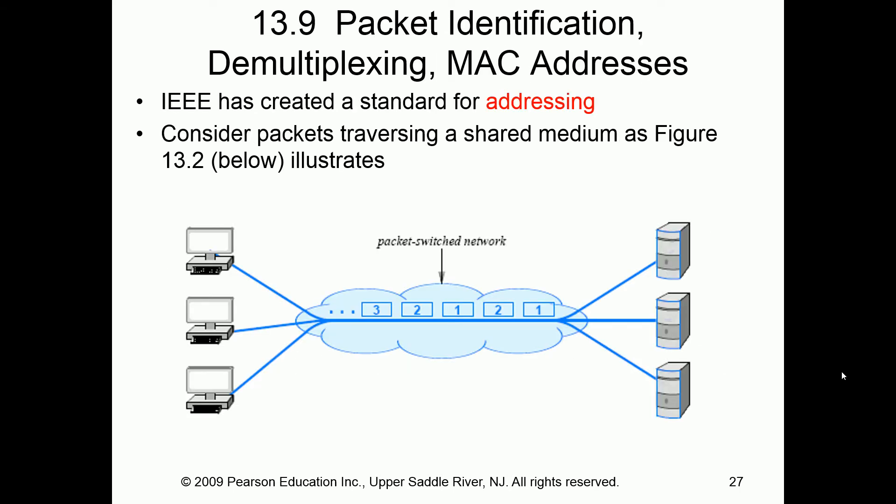Now let's get back to packet identification, demultiplexing, and media access control addressing. Our MAC address is a physical address burned into our network interface cards. Where you plug in your network cable is a NIC; a USB wireless controller is a wireless NIC. If you connect to a network, you have a NIC with an address. For data networks we're talking about a MAC address and an IP address.